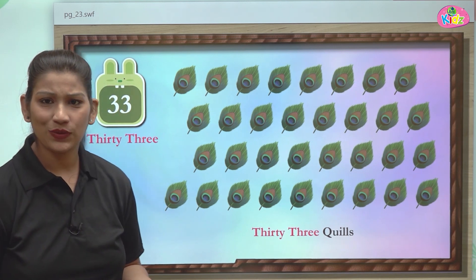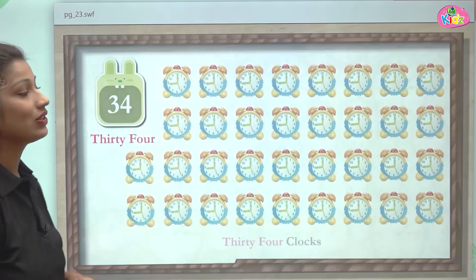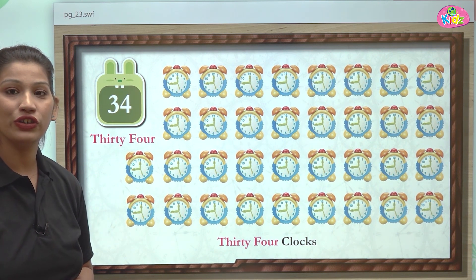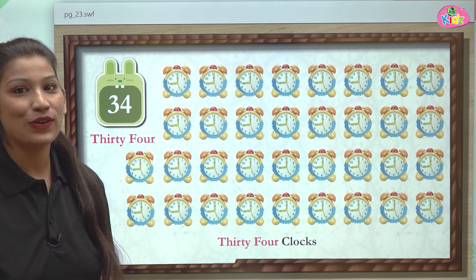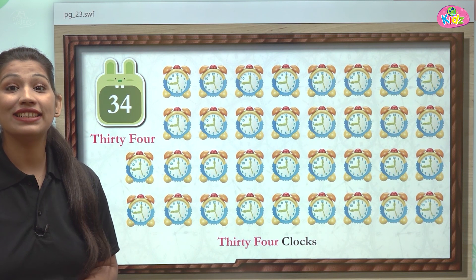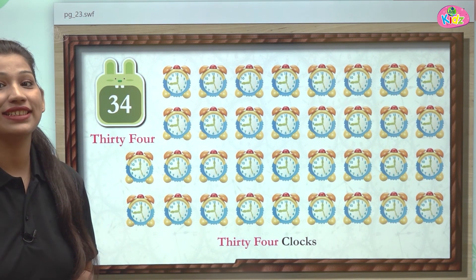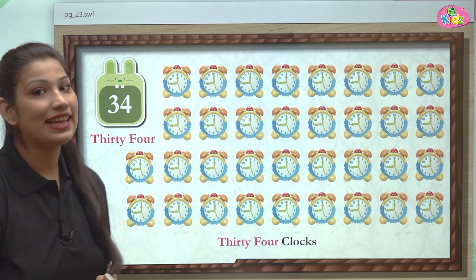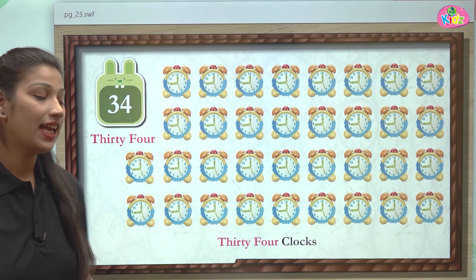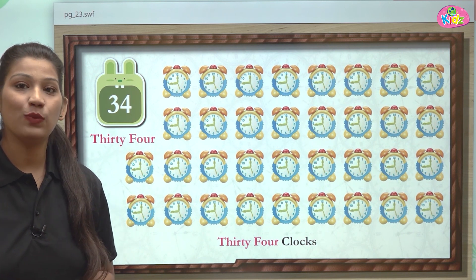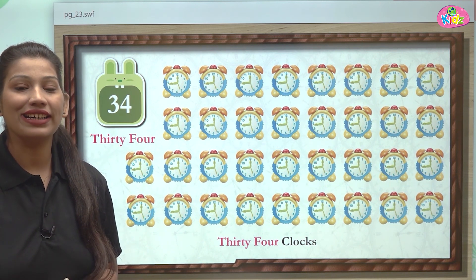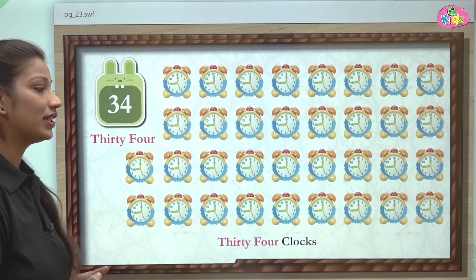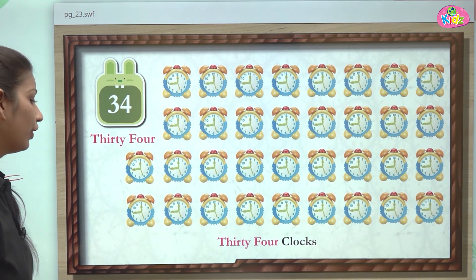What comes after 33? After 33 comes 34. This is number 34. Here you can see 34 clocks. These clocks are 34 in number. 34 is very easy to write — you just have to write 30 and 4. T-H-I-R-T-Y is 30, F-O-U-R is four — together they make 34.